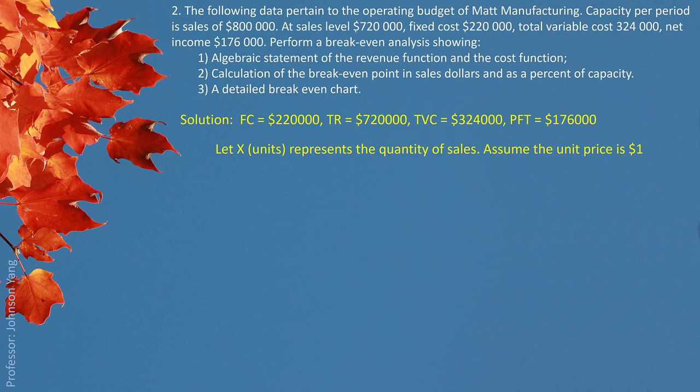Let X represent the quantity of sales. We assume the unit price is $1 to make the question easier. In that case, our total revenue function would be X, which is the quantity multiplied by $1. Our variable cost per unit would be $324,000 (total variable cost) divided by $720,000 (total units), giving us $0.45 variable cost per unit. We can express our total cost function as $220,000 plus 0.45X.